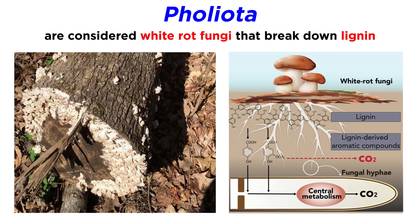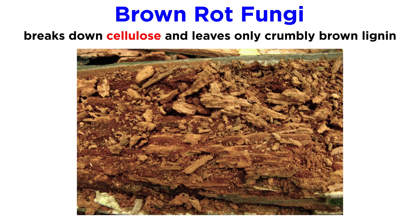All Pholiota species are considered white rot fungi, which describes fungi that only break down the lignin of wood, leaving the white fibrous cellulose. Another type of wood decay is brown rot, which breaks down the cellulose, leaving only crumbly brown lignin.